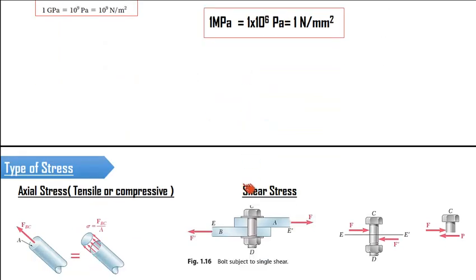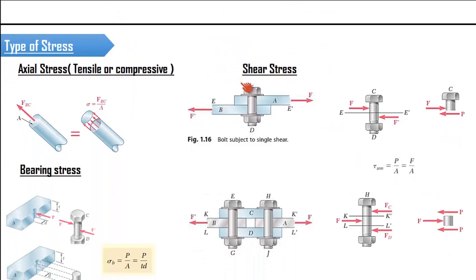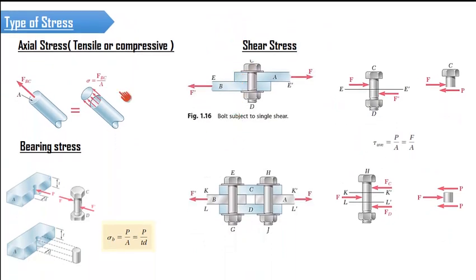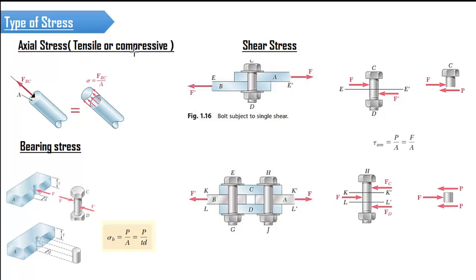Moving forward, we have different types of stresses. We have axial stress, which acts perpendicular to the surface area in the axial direction. It can be tensile or compressive — if the force is acting in the opposite direction, creating a compressive effect on the body, it is called compressive stress.